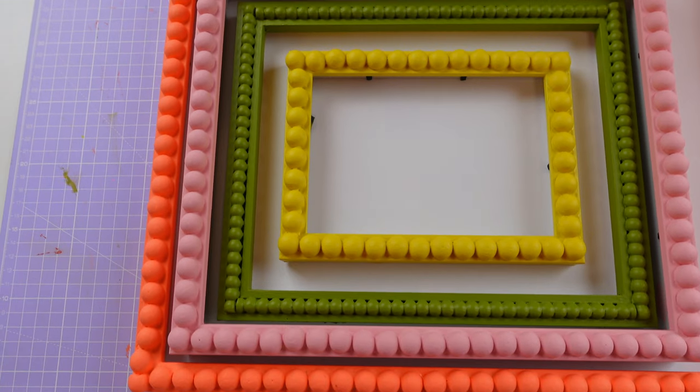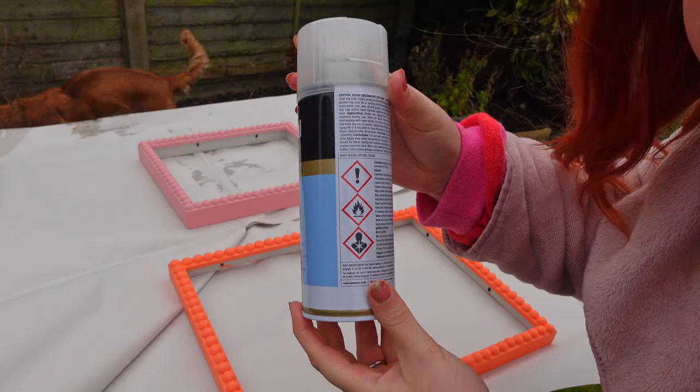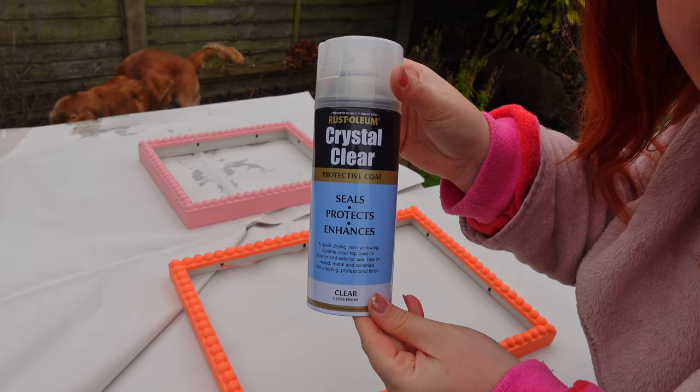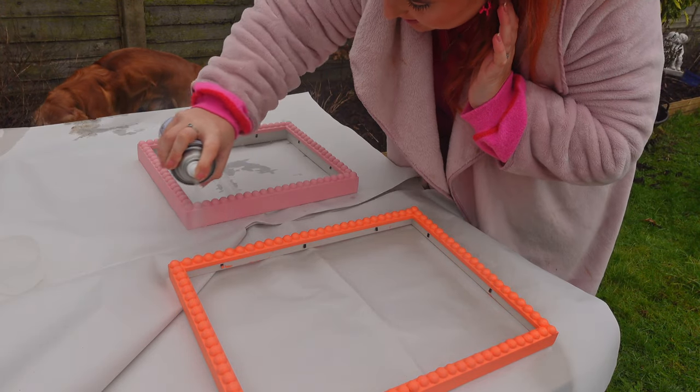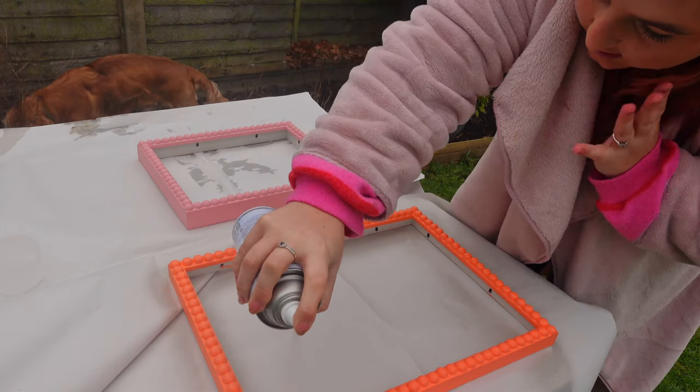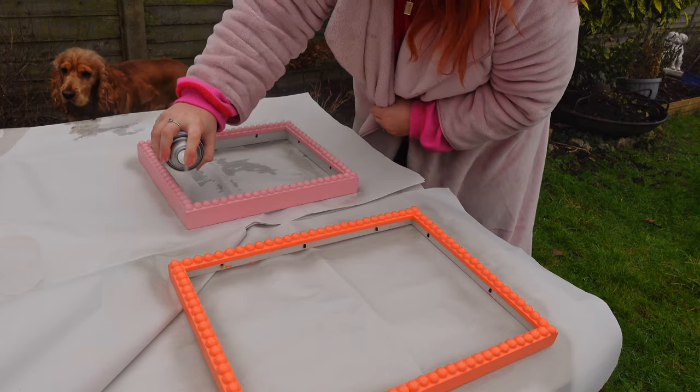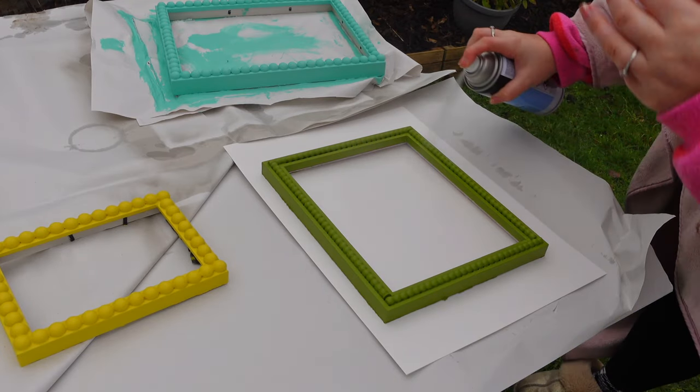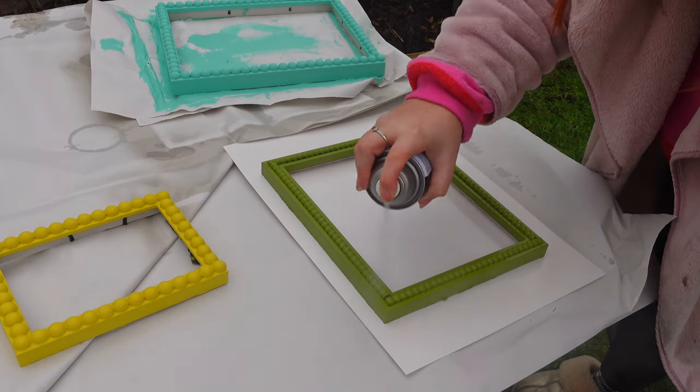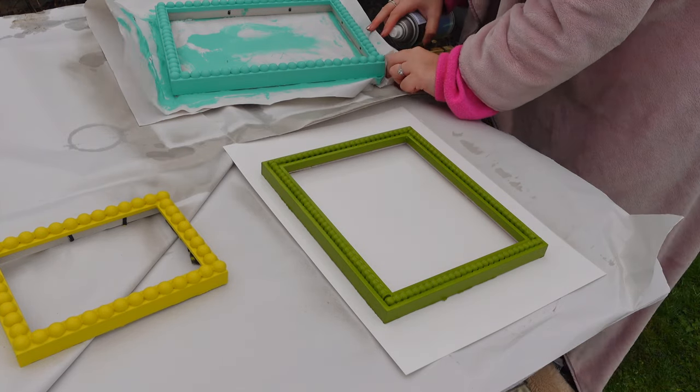Now all the frames have had three coats, this is what they look like, they've dried and they've got a very matte finish, so I want to seal them with some gloss spray. You can get this spray in a matte effect if you want to keep the matte effect, but I personally really like the glossy effect. So I am spraying each frame twice and then just leaving them to dry again and it just protects the paint and makes sure they have a really nice finish.